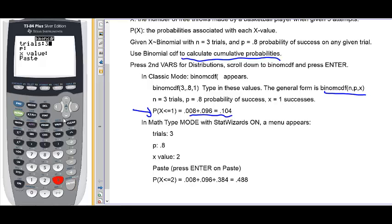Number of trials is 3. Probability of success on each trial is 0.8. This basketball player hits about 80% of his shots. And for a particular X value, we'll put in 2 this time.